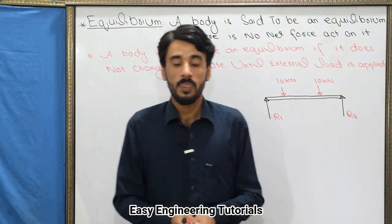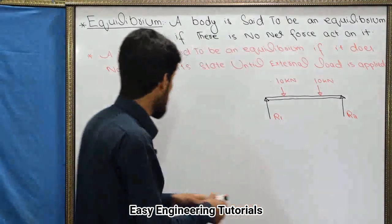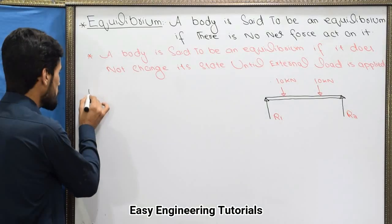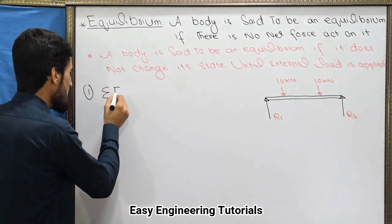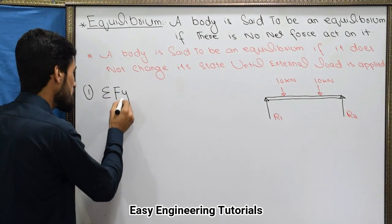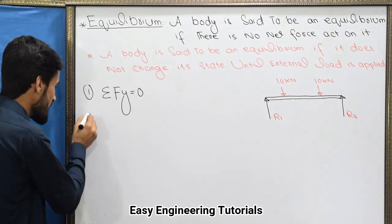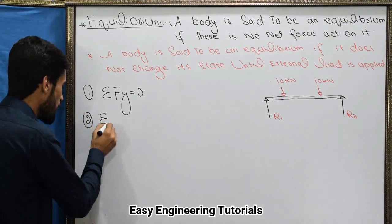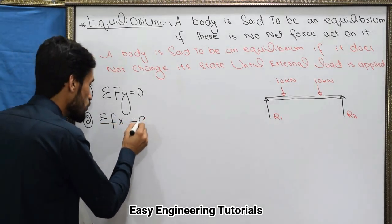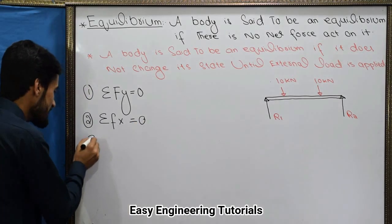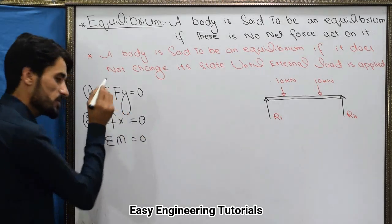Now, there are three conditions of equilibrium. The first condition is that the summation of all forces along the Y-axis must be equal to zero. The second condition is that the summation of forces along the X-axis is equal to zero. And the third condition is that the summation of moments is equal to zero.